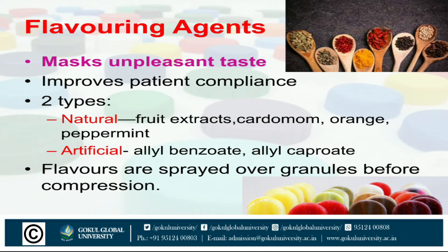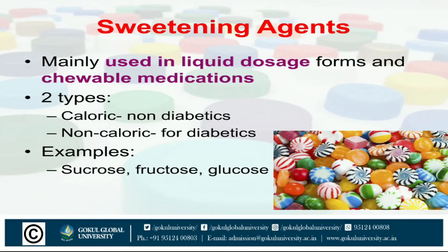Flavoring agents mask any unpleasant taste or odor, improve patient compliance and make the product more palatable. They are mainly classified into two types — natural and artificial. Under natural we have fruit extracts, cardamom, orange and peppermint. Under artificial we have allyl benzoate and allyl caproate. Flavors are usually sprayed over granules before compression.